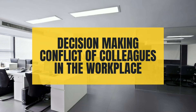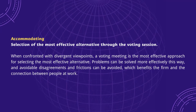Decision-making: Conflict of colleagues in the workplace. Accommodating — Selection of the most effective alternative through the voting session: when confronted with divergent viewpoints, a voting meeting is the most effective approach for selecting the best alternative. Problems can be solved more effectively this way, and avoidable disagreements and frictions can be avoided, which benefits the firm and the connection between people at work.